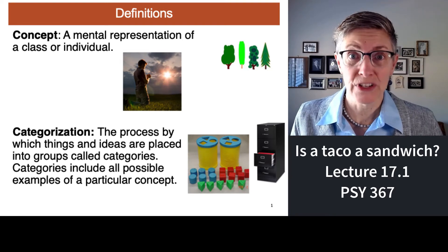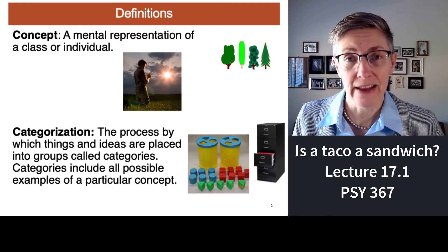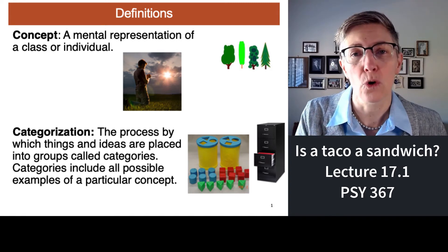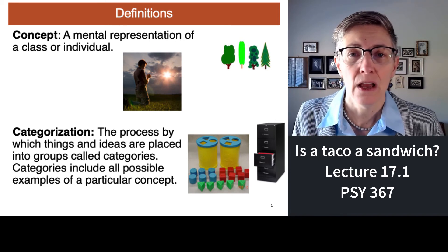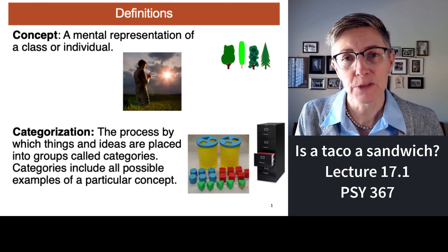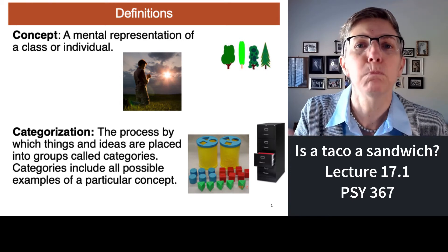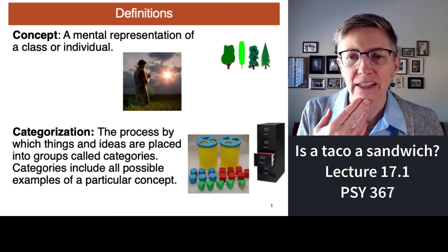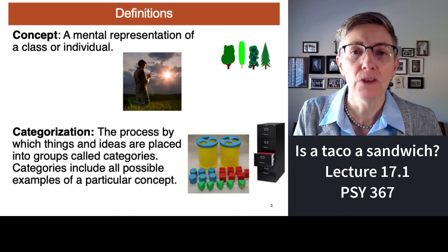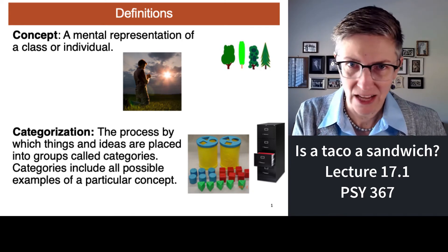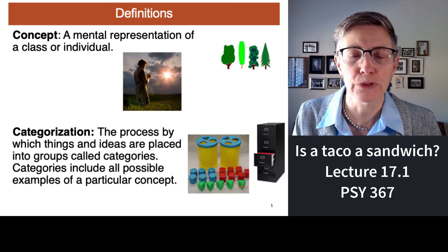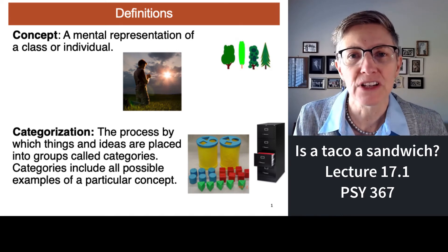Concepts and categories — that's what we're going to talk about in this lecture and the next. A concept is our representation of a thing, a person, or a class of things. Categorization is a process by which we place things into categories — we put things into groups based on similarity. A category should contain every possible example of a particular concept. So we have a concept of fruits and vegetables, and you just categorized items into those groups.